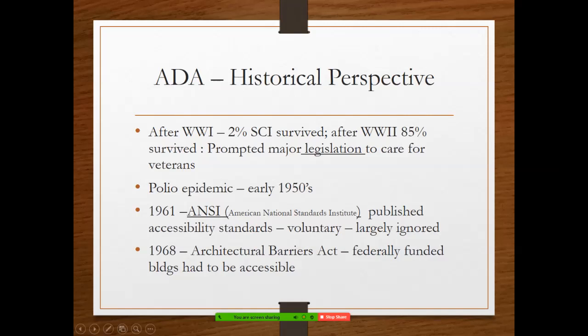Along came ANSI in 1961. Architects, design people, and construction leaders got together and published accessibility standards. These standards were put out to the community and to the nation, and it was voluntary to follow them. They encouraged people to follow them, but as we know, if something doesn't have any teeth behind it — no ramifications — it's usually ignored. That's kind of what happened with ANSI in 1961.